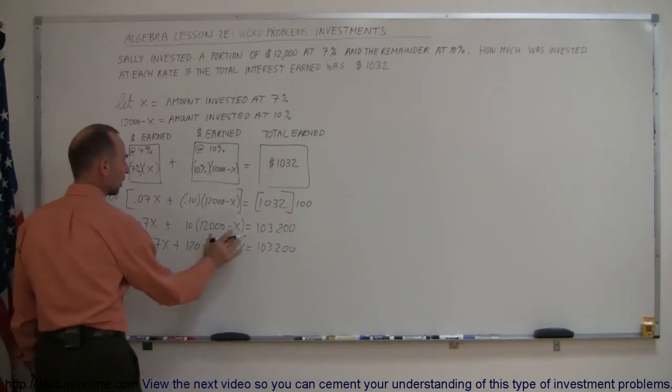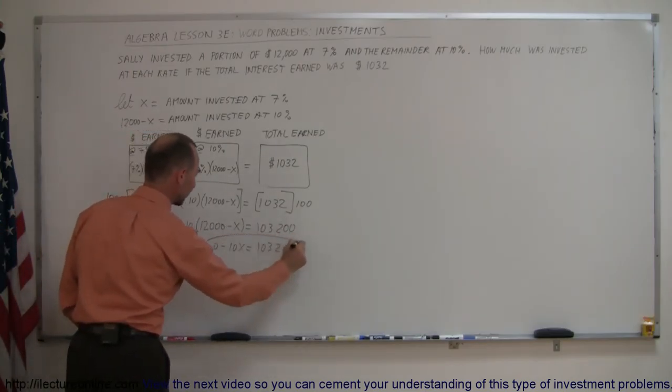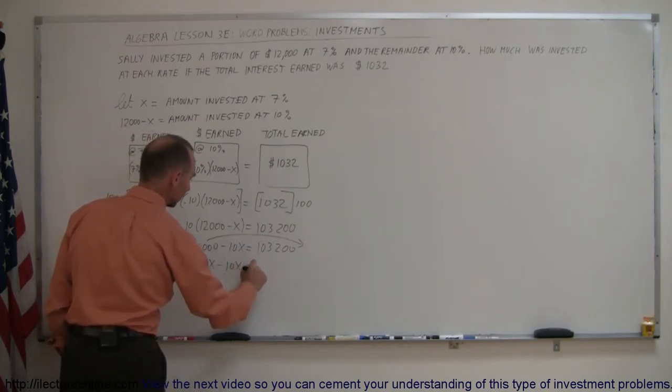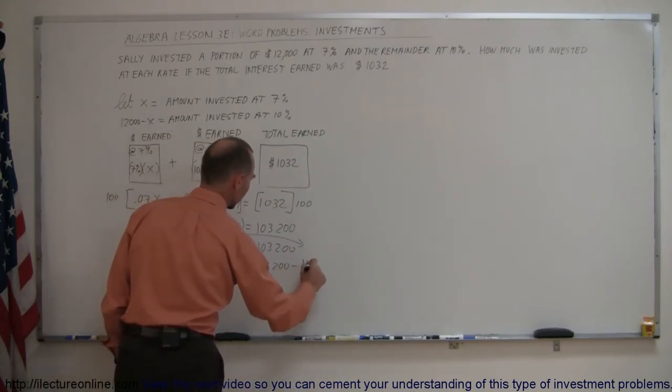Now, moving the 120,000 across so we have all the x's on one side and all the numbers on the other side, we end up with 7x minus 10x equals 103,200 minus 120,000.